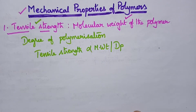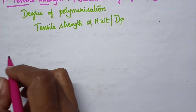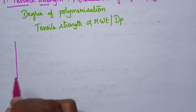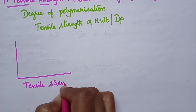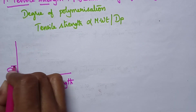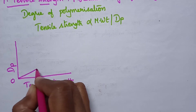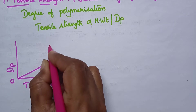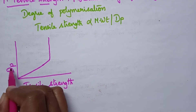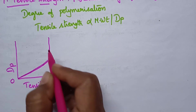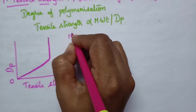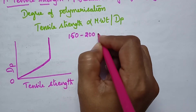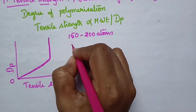For better understanding, let us draw the graph between tensile strength and degree of polymerization. From the graph, the tensile strength of a polymer slowly increases with the increase in degree of polymerization. In order to exhibit minimum tensile strength, a polymer is supposed to contain at least 150 to 200 atoms on the main chain.